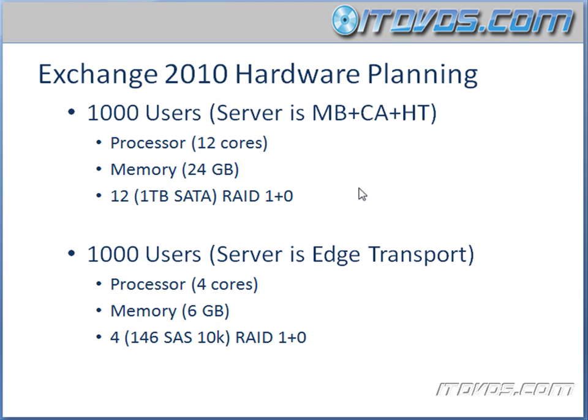We can put the archive portion of the user's mailbox on that drive. Because it's archived, it'll be accessed less, it might have a lower SLA, and it's going to be cheaper because you're not losing half your disks to your RAID configuration.